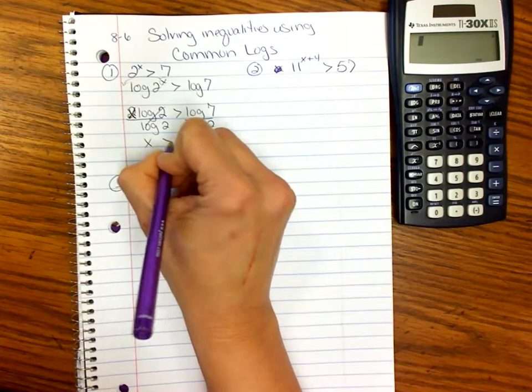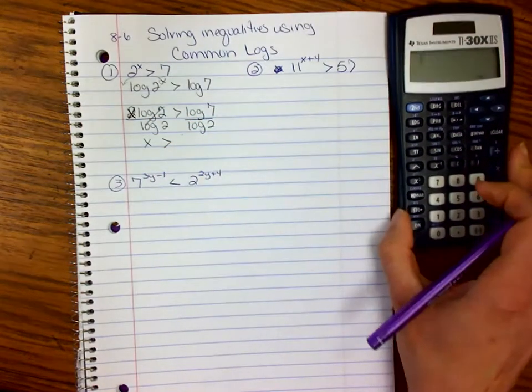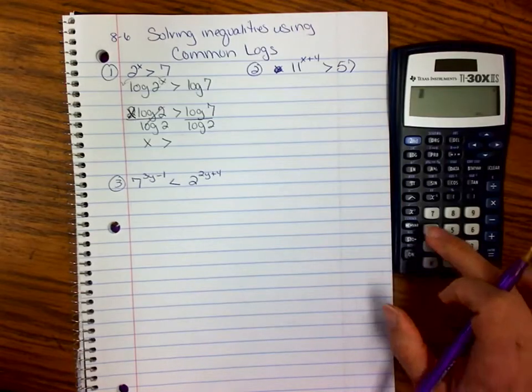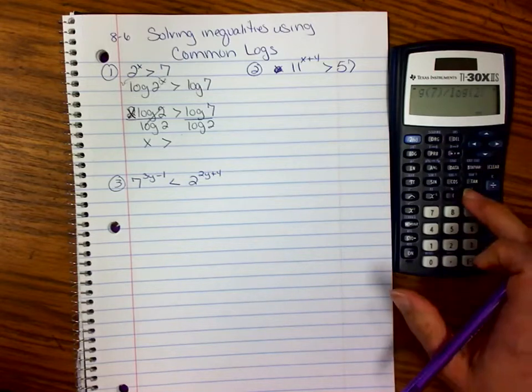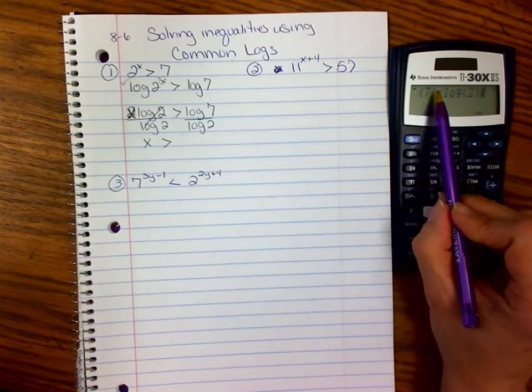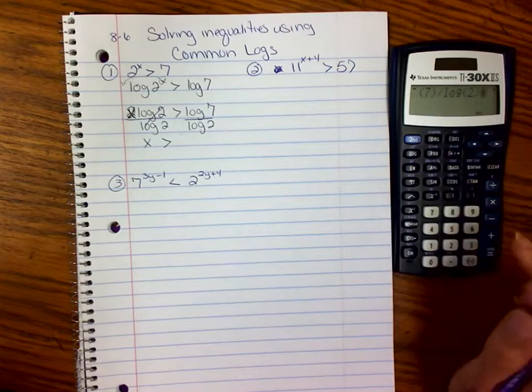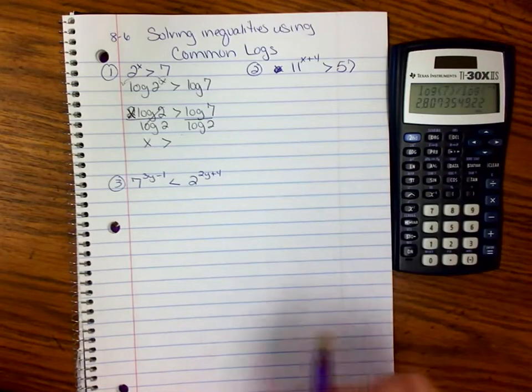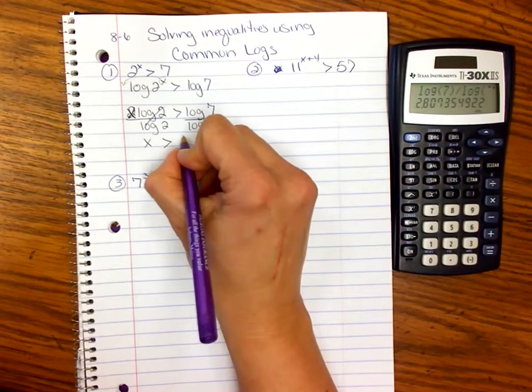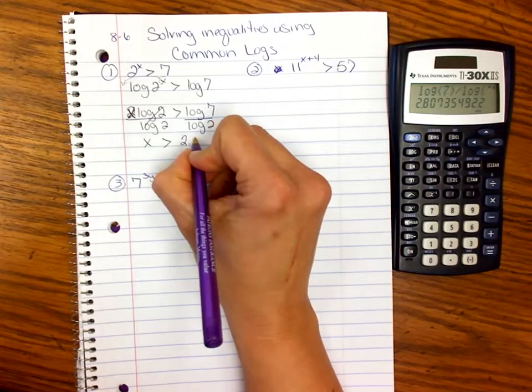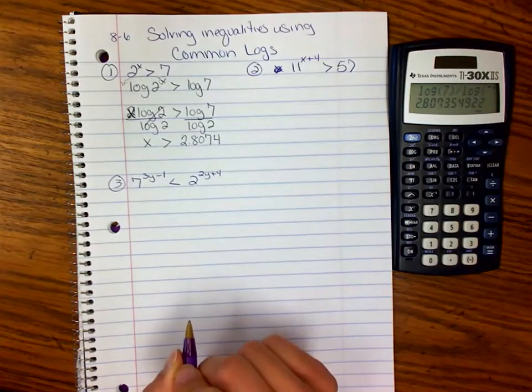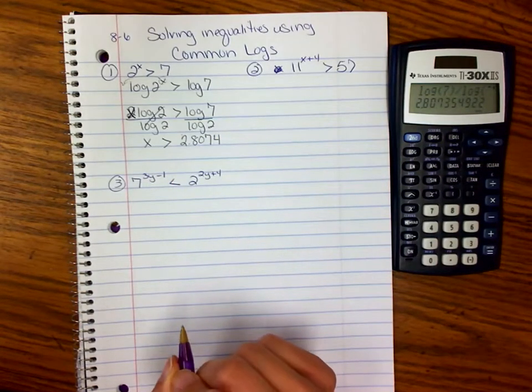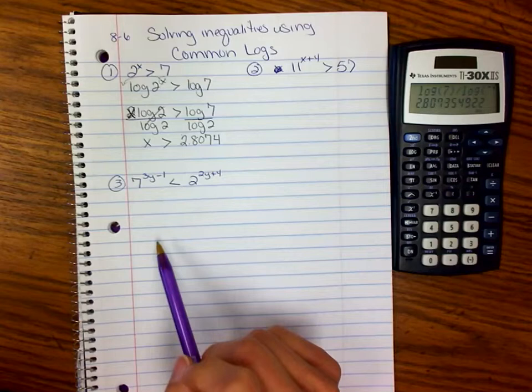So x > log(7)/log(2). In our calculator, we take the log of 7 and divide it by the log of 2. If you have a calculator like this, remember to end that parenthesis after the first log, or you'll get the wrong answer. We expected it to be less than 3 because 2^3 = 8. We get 2.8074, so x needs to be greater than 2.8074 for 2^x to be greater than 7.